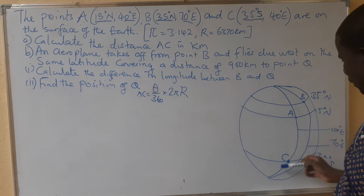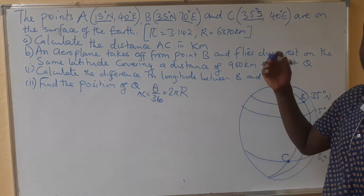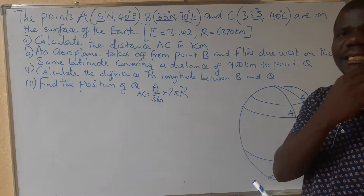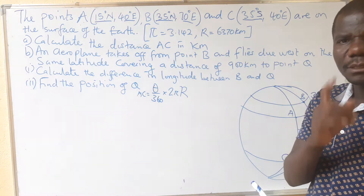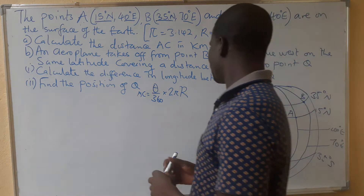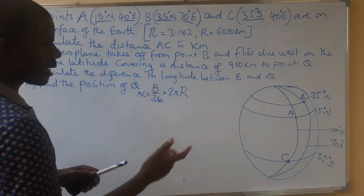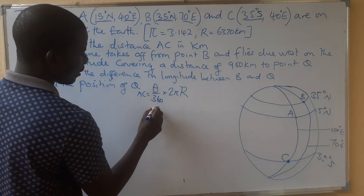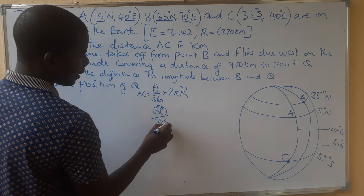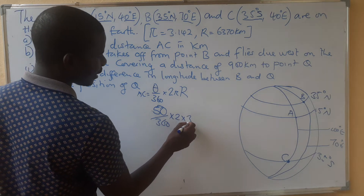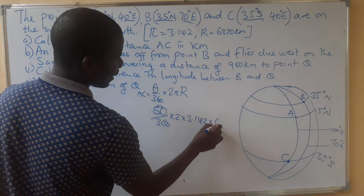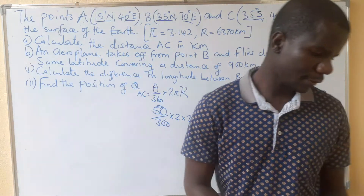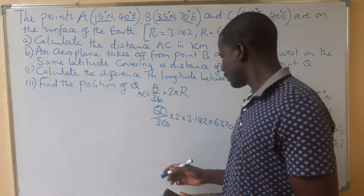This one is 15 degrees north, this one is 85 degrees south. If the latitudes are from two different hemispheres, to find the difference you're supposed to add them. So when you add them — different hemispheres, you add — we get 100. Then that goes over 360, multiplied by 2, multiplied by 3.142, multiplied by the radius of the Earth, which has been given in kilometers.